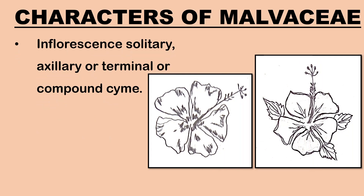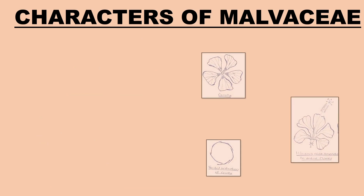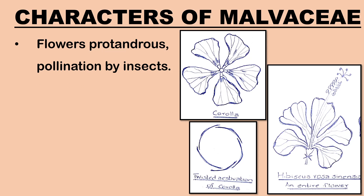Inflorescence may be solitary, axillary or terminal in position, or it may be a compound cyme. Flowers are bisexual, pentamerous — the number of parts in each whorl is 5 — actinomorphic, meaning the flower can be divided into two exactly equal halves by any vertical section passing through the center. They are complete, hypogynous — the ovary occupies the highest position on the thalamus — epicalyx present, pedicellate and brightly colored. The flowers are usually protandrous; anthers mature earlier than the stigma, and therefore pollination is mostly through the agency of insects.